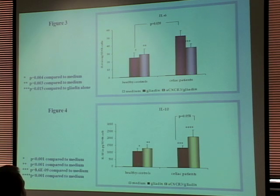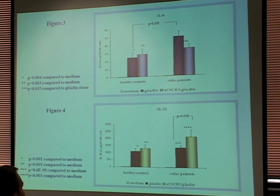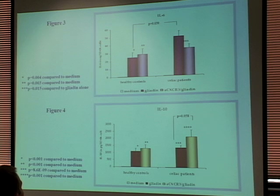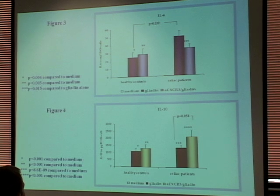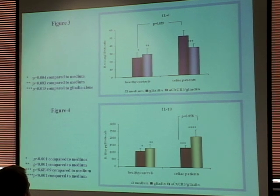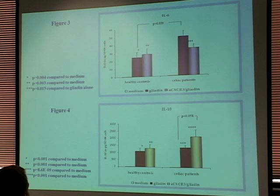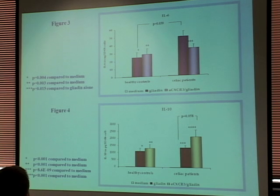Next we looked at IL-6 and IL-10. IL-6 is a pro-inflammatory cytokine important in acute phase responses; it promotes differentiation of T cells into T helper cells and is an activator of natural killer cells. IL-10, on the other hand, is an anti-inflammatory cytokine that inhibits the synthesis of pro-inflammatory cytokines like interferon gamma, IL-2, IL-3, and TNF-alpha. For both IL-6 and IL-10, production is higher in celiac patients than in healthy controls. IL-6 production goes down when CXCR3 is blocked, while IL-10 production goes up when CXCR3 is blocked.